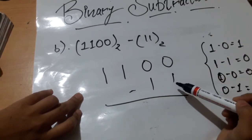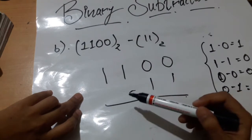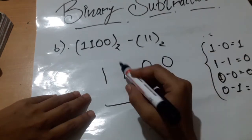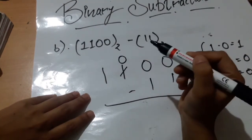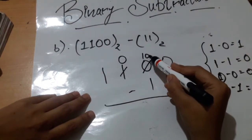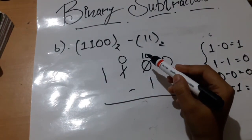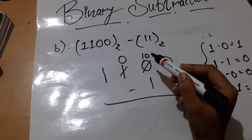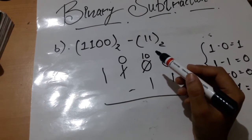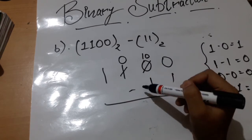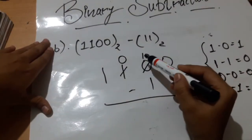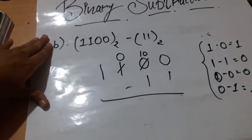We can see that there is 0 minus 1. So we have to borrow 1 from the next place. But that next place is also 0, so we shift further and ask for help from the next number. That digit becomes 0 and the value transfers as 10 in binary. We cannot do 10 minus 1 as 9, because that would be wrong — binary numbers only use 0 and 1. So we need to convert this binary 10 into a decimal number.